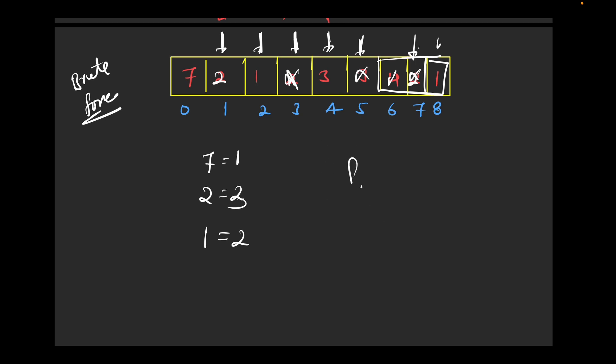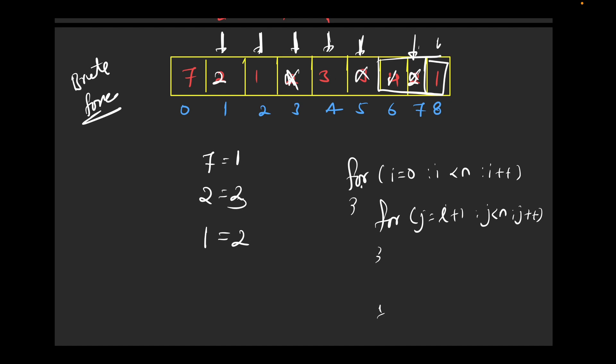The outer loop goes from 0 to n, and the inner loop goes from i+1 to n. For each pair, if a[i] equals a[j], we increment count. This is the brute force approach. I won't write the full program — the goal is to build logic and intuition, and I encourage you to try writing the brute force code yourself.